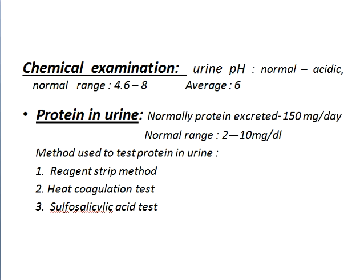Chemical examination of urine — urine pH: normal acidity, normal range 4.6 to 8, average 6. Protein in urine: normally protein excreted is 150 mg per day. Normal range is 2 to 10 mg per deciliter per day.